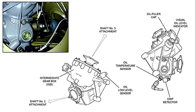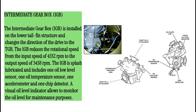Intermediate gearbox (IGB). The intermediate gearbox is installed on the lower tail fin structure and changes the direction of the drive to the TGB. The IGB reduces the rotational speed from the input speed of 4,532 RPM to the output speed of 3,458 RPM. The IGB is splash lubricated and includes one oil low-level sensor, one oil temperature sensor, one accelerometer, and one chip detector. A visual oil level indicator allows monitoring of the oil level for maintenance purposes.